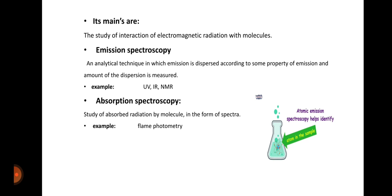Some measures of UV spectroscopy are: it is the study of interaction of electromagnetic radiation with molecules. Emission spectroscopy is an analytical technique in which emission is dispersed according to some property of emission and amount of the dispersion is measured. For example, in UV, IR and NMR.